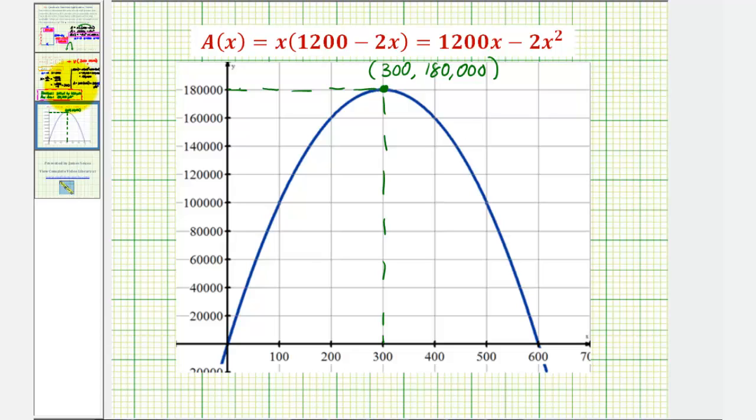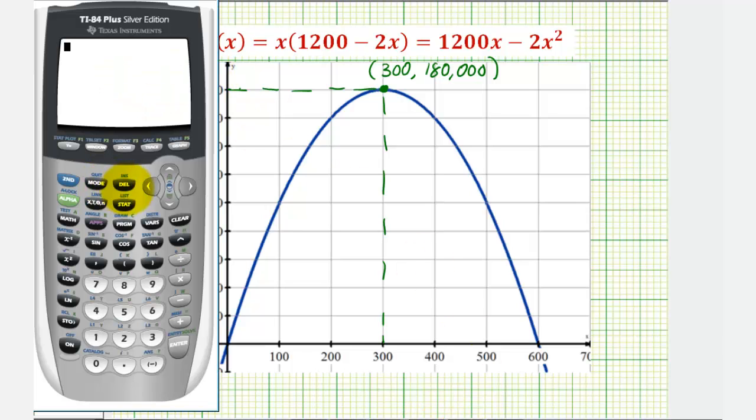Of course, if we wanted to, we could have also solved this using a graphing calculator. So let's go ahead and quickly show that. So we'll press y equals, clear any old functions, and type in our new function either in factored form or expanded form. I'm going to type in 1,200x minus 2x squared.